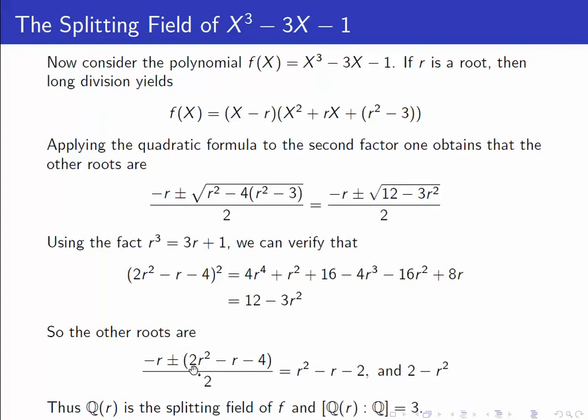The other roots are minus r plus or minus 2r squared minus r minus 4 over 2. So they're just r squared minus r minus 2 and 2 minus r squared.